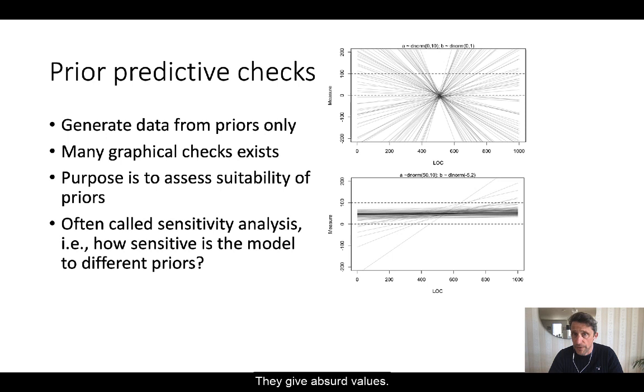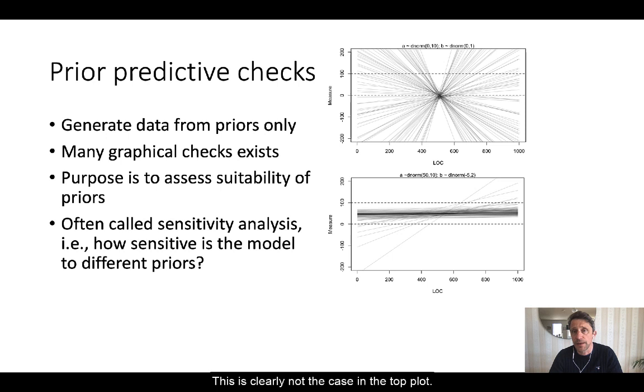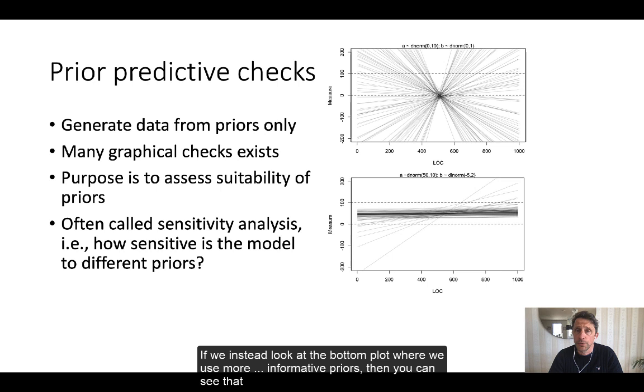They give absurd values. And the point here is that we would like to have the majority of our probability mass between the two dashed lines. This is clearly not the case in the top plot.